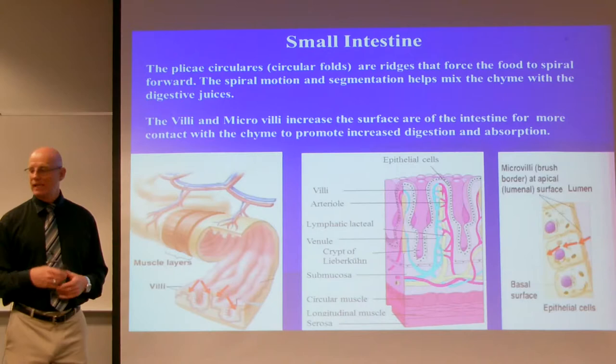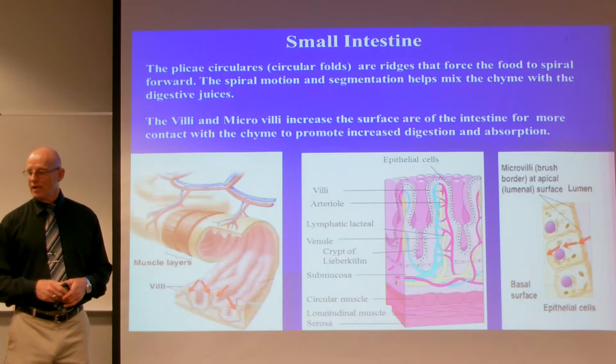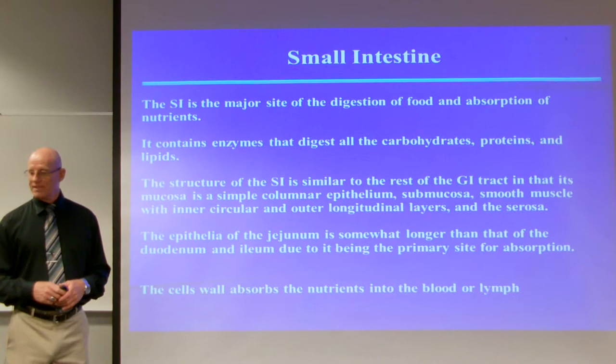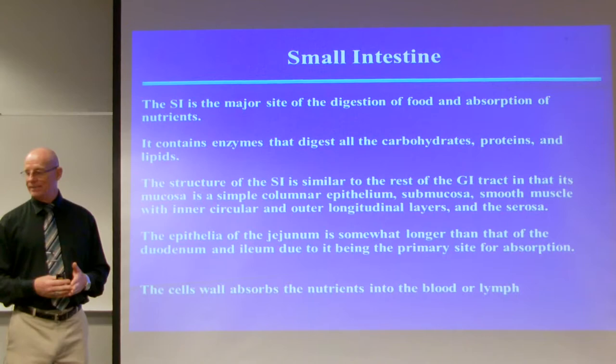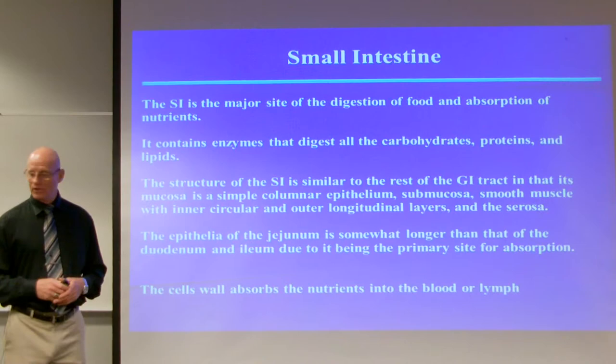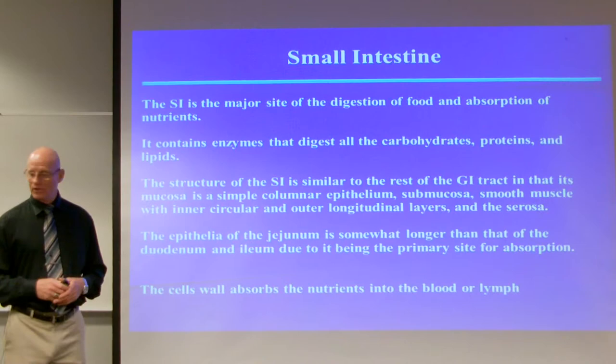The small intestine is the major site of digestion and absorption of nutrients. It contains enzymes that digest all carbohydrates, proteins, and lipids. Its structure is a simple columnar epithelium mucosa with submucosa, smooth muscle with inner circular and outer longitudinal layers, and the serosa. The epithelium of the jejunum is somewhat longer than that of the duodenum and ileum because it is the primary site for most energy-yielding nutrients.